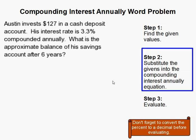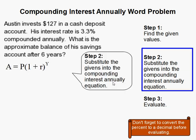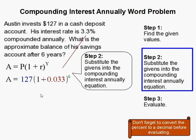Now we substitute those values into the Compounding Interest Annually equation. So $127 is for P, the principal. Now we have 3.3% — don't forget, you need to convert that to a decimal. You move the decimal over twice to the left: 1, 2 — that's why there's a zero there. And 6 years, so the 6 goes in for the exponent.